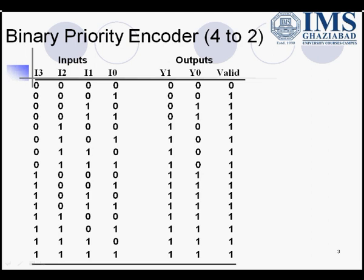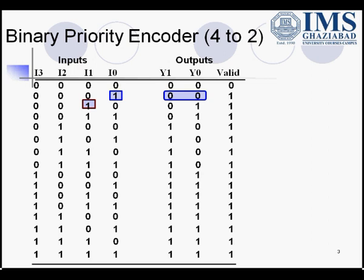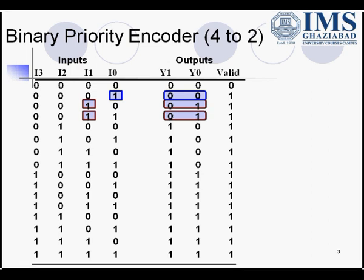In the second row we have 0, 0, 0, 1 — I0 is high — so based on I0, the output would be 0, 0. In the next row, we have 0, 0, 1, 0 — I1 is high — so the output is 0, 1. In the fourth row, we have 0, 0, 1, 1 — I0 and I1 are both active high — but priority would be given to I1 since it's the highest number. So the output would be based on I1, that is 0, 1.